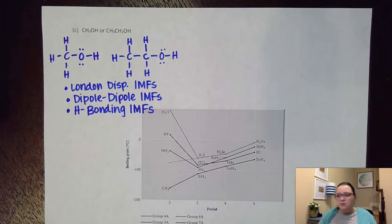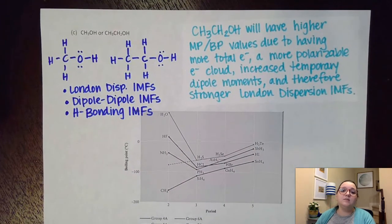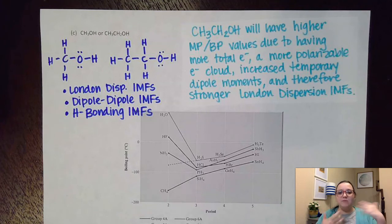And so here's the thing I would probably put for a question like this. I would say something along the lines of the fact that CH3CH2OH would have higher melting point, boiling point values due to having more total electrons, which leads to a more polarizable electron cloud, which leads to increased temporary dipole moments, and therefore stronger London dispersion forces. So that same statement that we looked at in the last video, going through that chain of statements to tie our way to having stronger London dispersion forces would help us to argue that it should have a higher melting point, boiling point values.